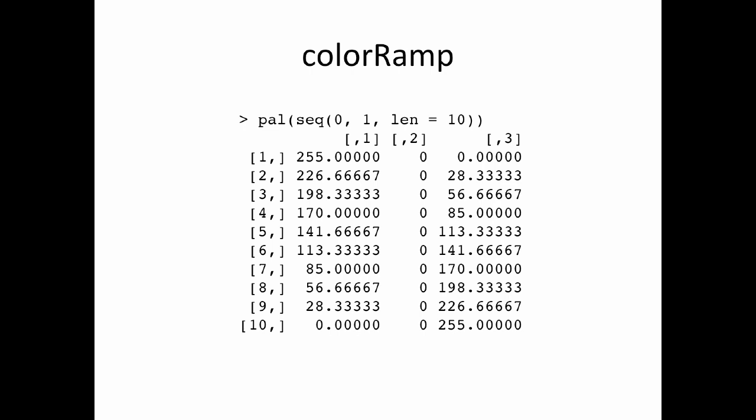If I give a sequence of numbers between 0 and 1, pal gives me a sequence of colors between red and blue. Here I'm giving a sequence of length 10, starting at 0 and ending at 1. At the top I start with maximum red and 0 for green and blue, then I slowly reduce red and increase blue until at the bottom I have all blue and no red or green — those are the interpolated colors between red and blue.